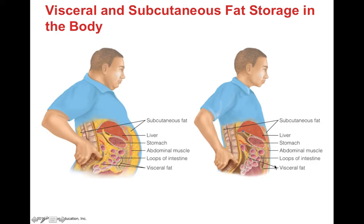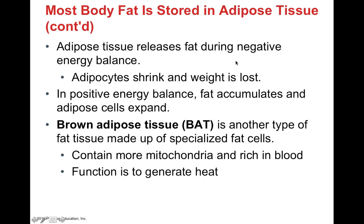If you start to lose fat, not only do you lose your abdominal subcutaneous fat, but you also start losing visceral fat. Adipose tissue is storage for fat — when you're in negative energy balance and not eating enough to meet your energy needs, adipose tissue can release fat, meaning adipocytes or fat cells can shrink and weight can be lost. When in positive energy balance, bringing in more calories than you're using, fat can accumulate and adipose cells can expand.